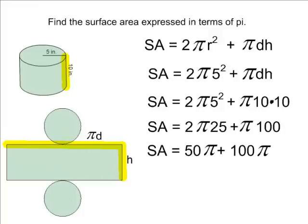If we combine 50 and 100, that would give us a total of 150π. So the combined area of all three surfaces is 150π square inches.